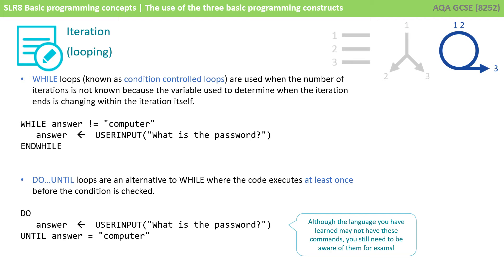Here we see while answer is not equal to computer, run this line of code. Answer equals input, what is the password? We don't know how many times that line of code needs to be executed. And every time round the while loop, it will say while answer is not equal to computer. And as long as it's false, as long as it's not equal to computer, it will carry on running that loop again and again. It could be once, it could be 10 times, it could be 100 times.